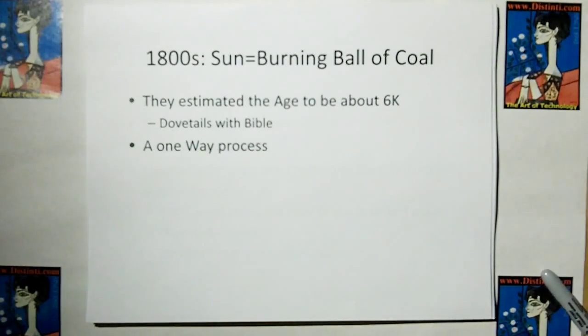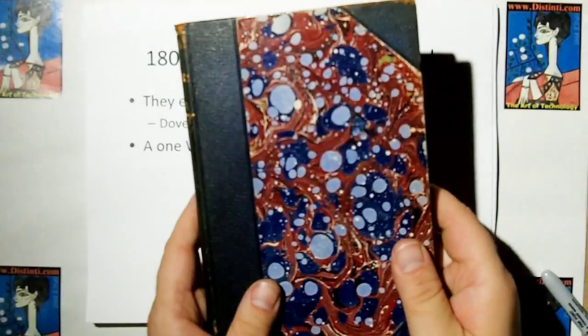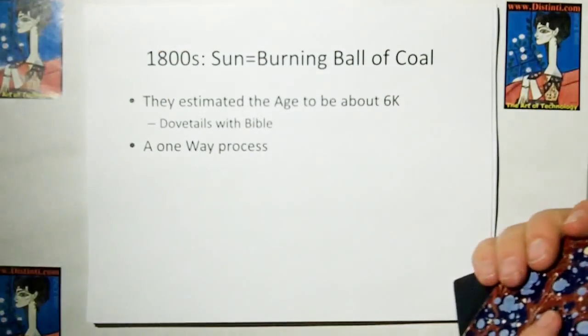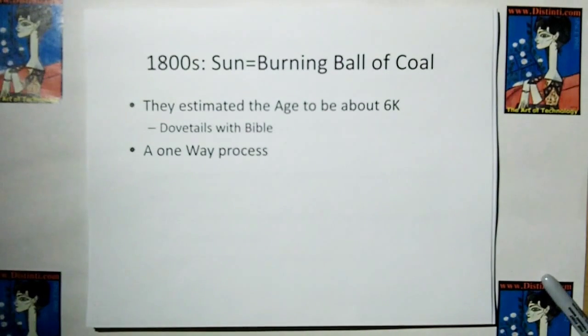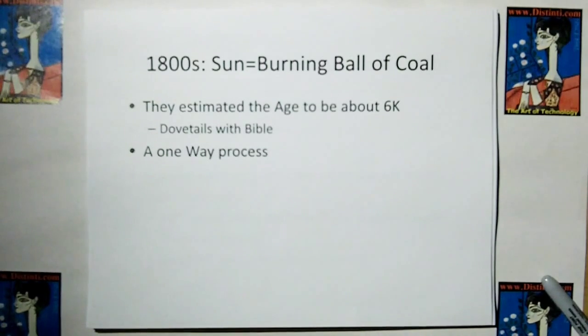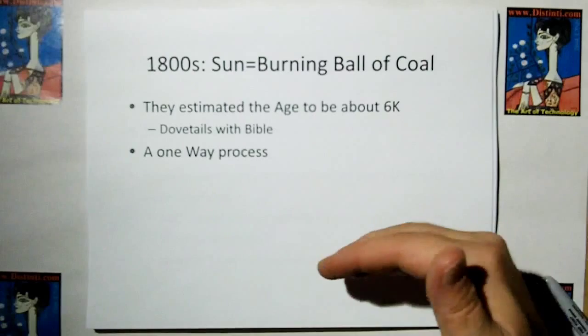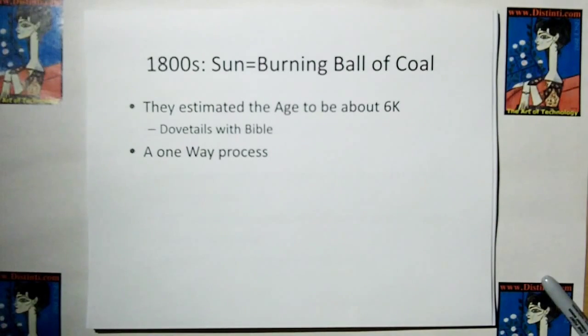Back in the 1800s, and I have an old book here from 1897, written by Tyndale, about the sun. And in this book, they discuss the theory that the sun was a burning ball of coal. Now why would they think that? Because back then, the only way they knew how to generate heat was to burn something.